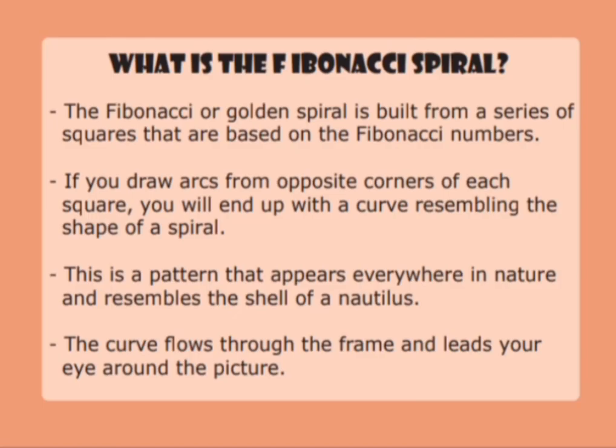What is the Fibonacci spiral? The Fibonacci or golden spiral is built from a series of squares based on the Fibonacci numbers. If you draw an arc from opposite corners of each square, you will end up with a curve resembling the shape of a spiral. This is a pattern that appears everywhere in nature and resembles the shell of a nautilus. The curve flows through the frame and leads your eye around the picture.